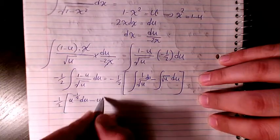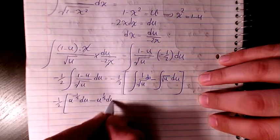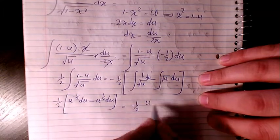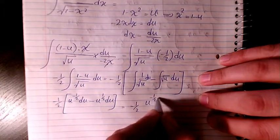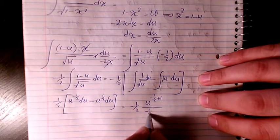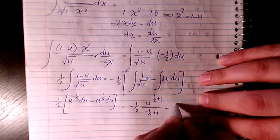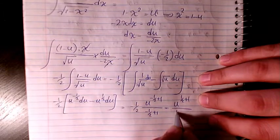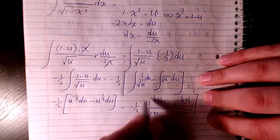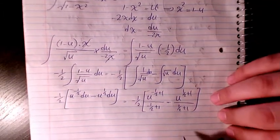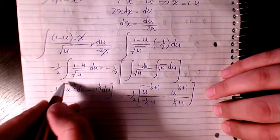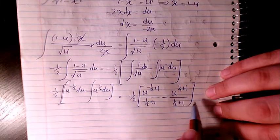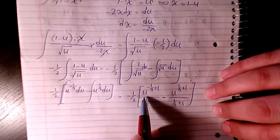Minus square root of u, which is u to the power of 1 over 2 du. So it will be negative 1 over 2 times u to the power of negative 1 over 2 plus 1, divided by negative 1 over 2 plus 1, minus u to the power of 1 over 2 plus 1, divided by 1 over 2 plus 1.